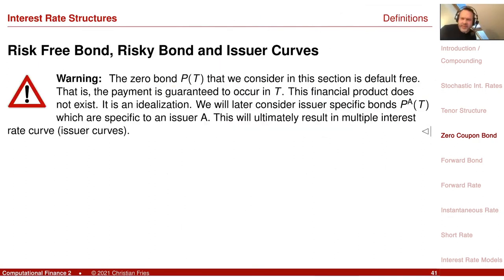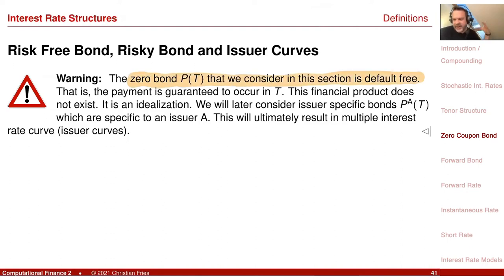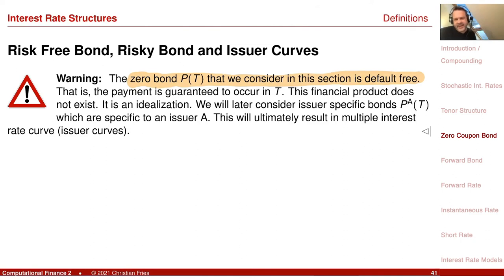A small remark: the zero coupon bond we consider is assumed to be default free, so the payment is guaranteed and there is no concept of default. We will discuss default later.